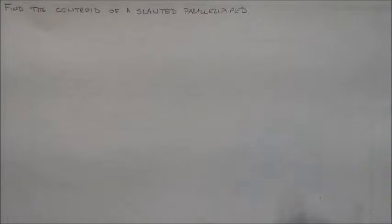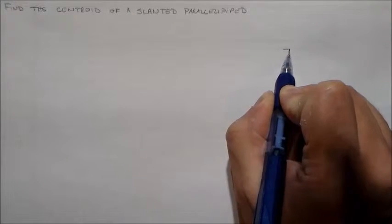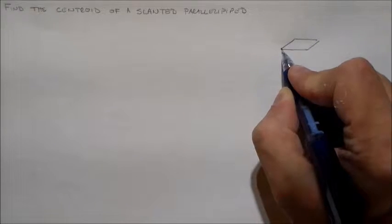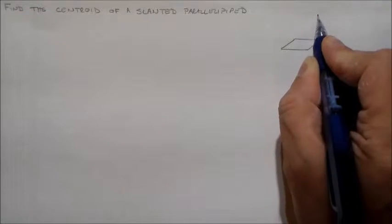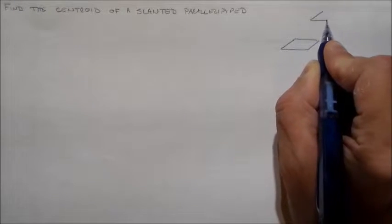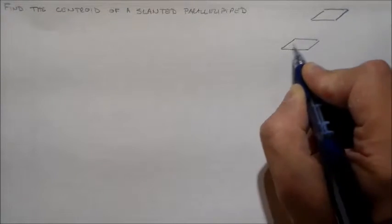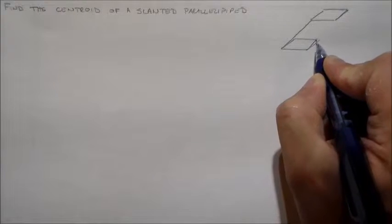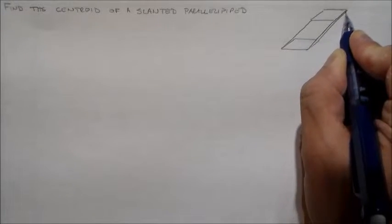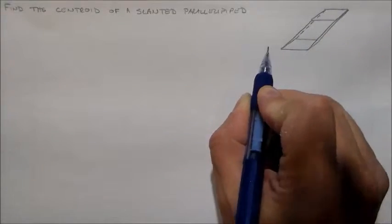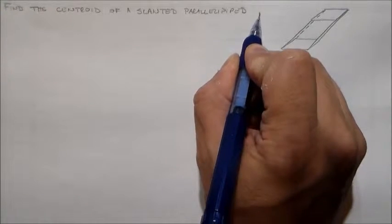What I'd like to do now is find the centroid of a slanted parallelepiped. So what do I mean by a slanted parallelepiped? I want something like this where I've got a square base and then a square top up here, and they're connected just like that. So that's my slanted parallelepiped with a square face.